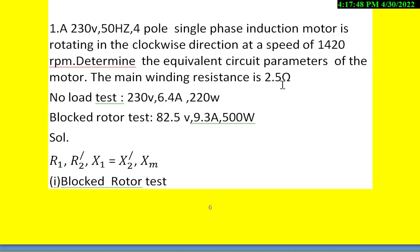The main winding resistance is 2.5Ω. No-load test data: 230V, 6.4A, 220W. Blocked rotor test: 82.5V, 9.3A, 500W.